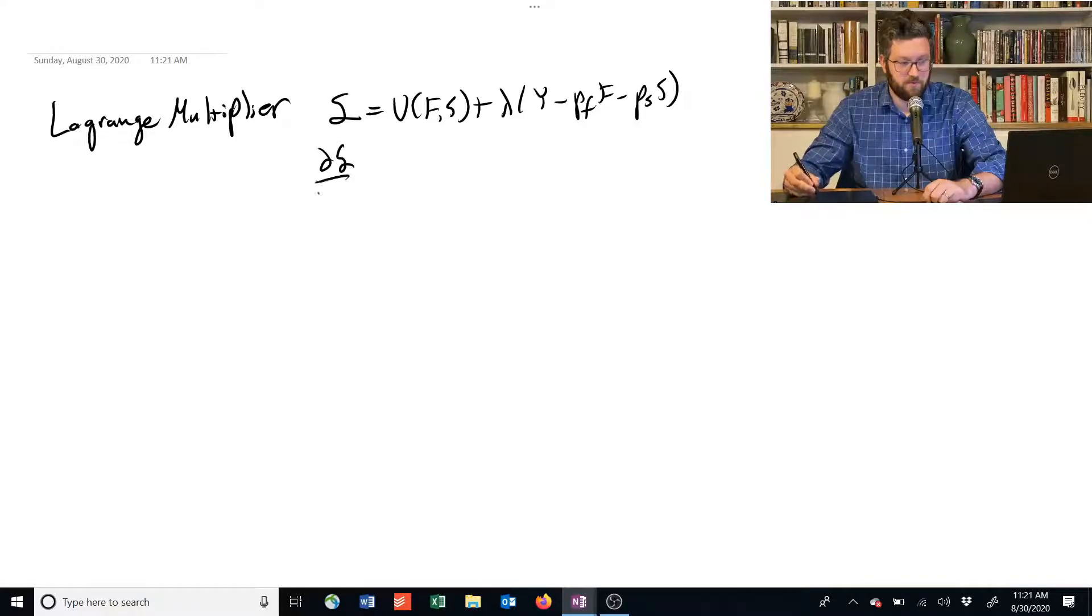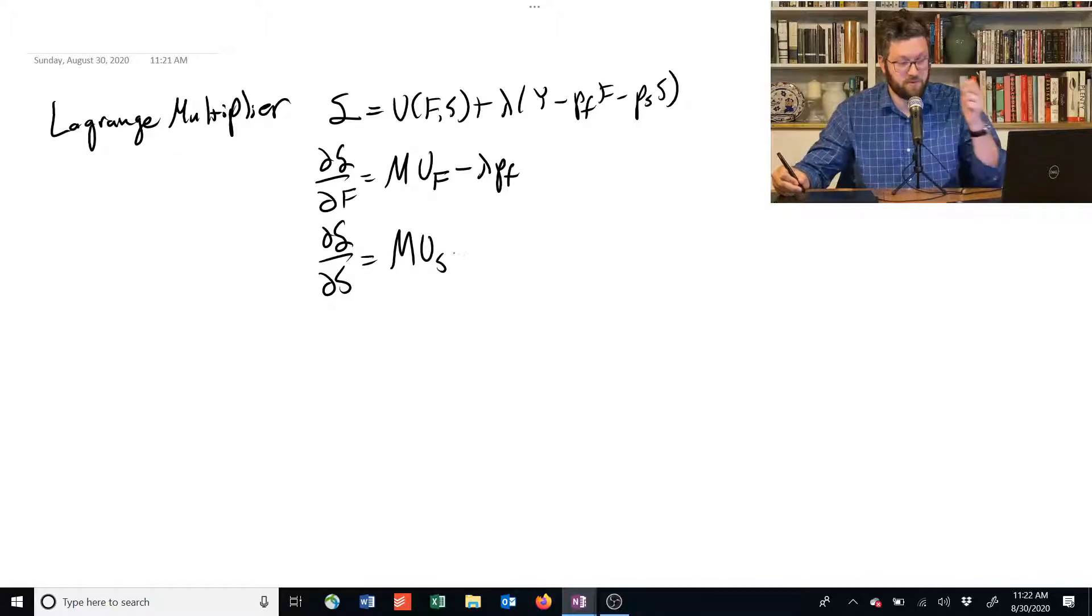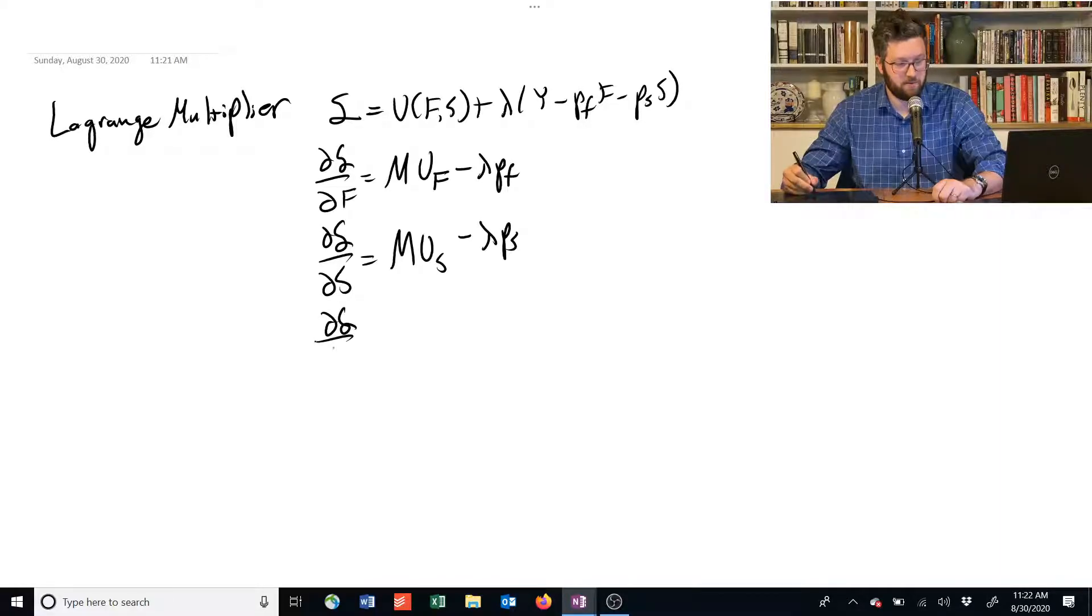We take the partial derivative with respect to each of the variables and we get something like this. So the partial derivative of the utility function with respect to f is the marginal utility of f minus lambda times pf. The partial derivative with respect to s is the marginal utility with respect to s minus lambda times ps. And then the last one gives us the budget constraint right back.